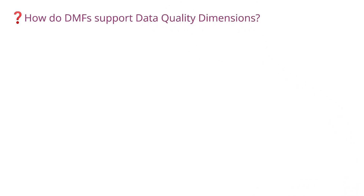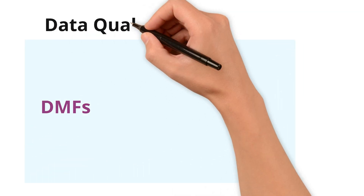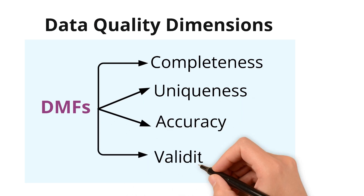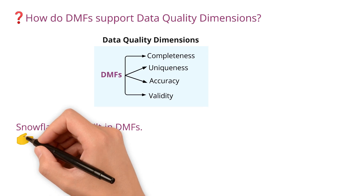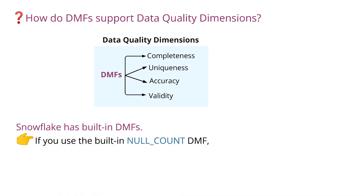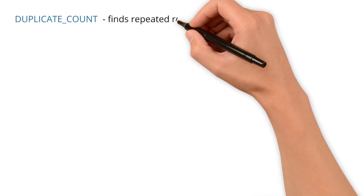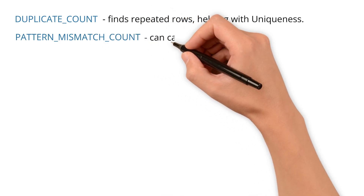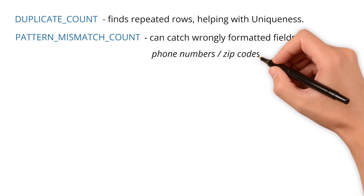How do DMFs support data quality dimensions? DMFs help you measure and monitor key data quality dimensions like completeness, uniqueness, accuracy, and validity. Snowflake has built-in DMFs. For example, the Null Count DMF checks for missing values, supporting the completeness dimension. Duplicate Count finds repeated rows, helping with uniqueness. Pattern Mismatch Count can catch wrongly formatted fields like phone numbers or zip codes, supporting validity.